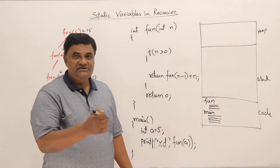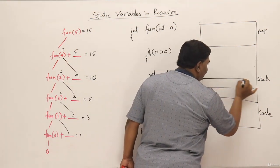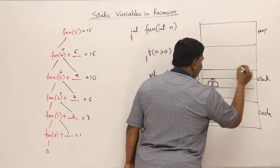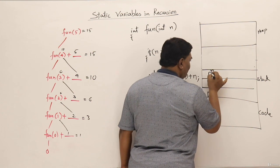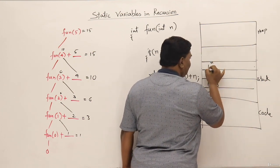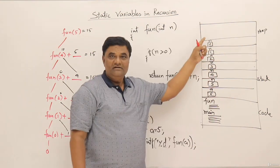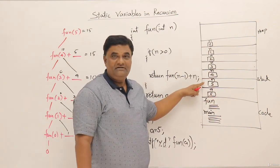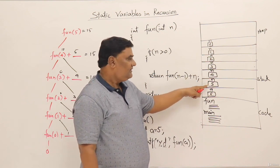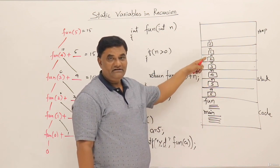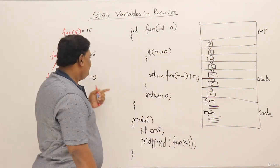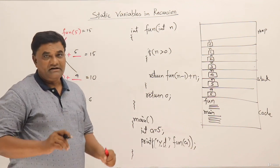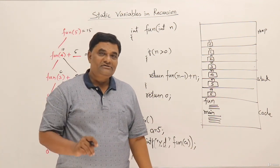Now let us see how activation records are created. For each call to 'fun', an activation record is created: n will be 5, then 4, then 3, then 2, then 1, then 0. Every time the function is called, a new variable n is created inside memory with its respective value. This is how we understand local variables of a function.